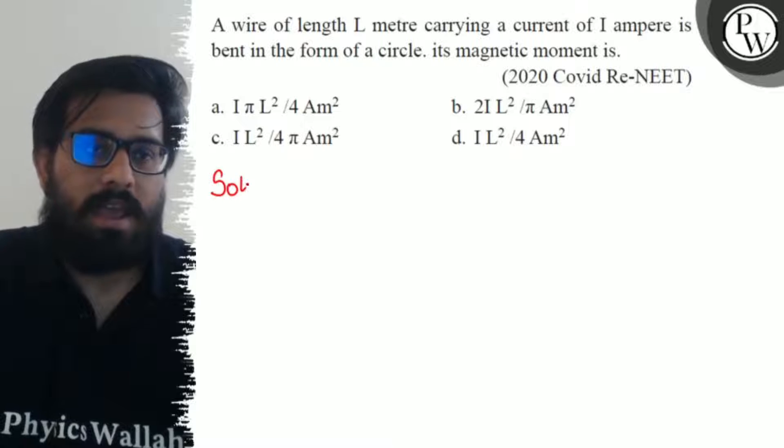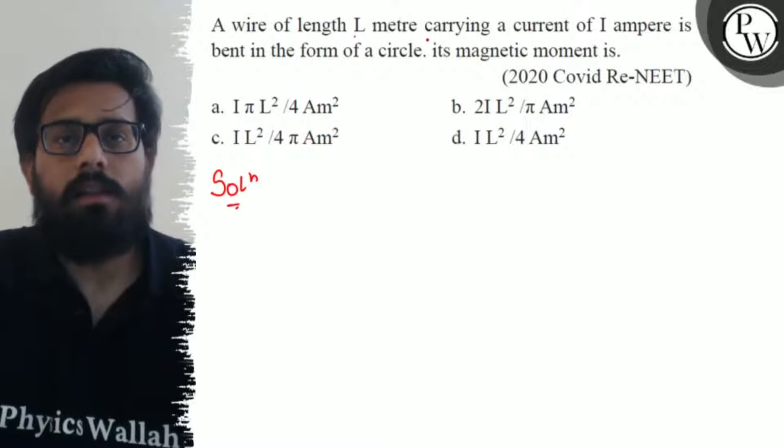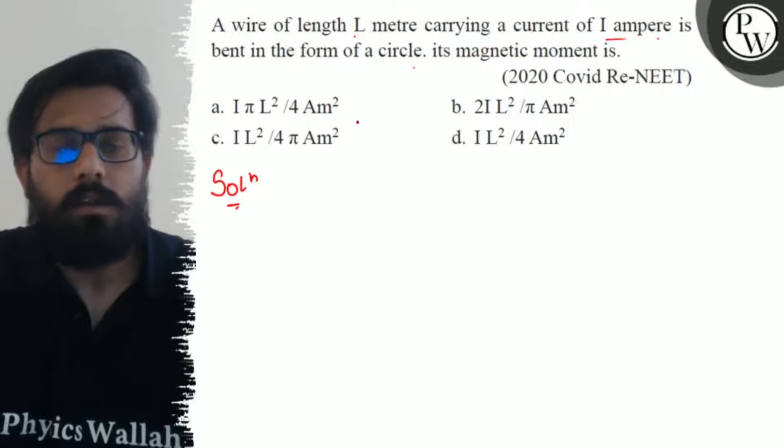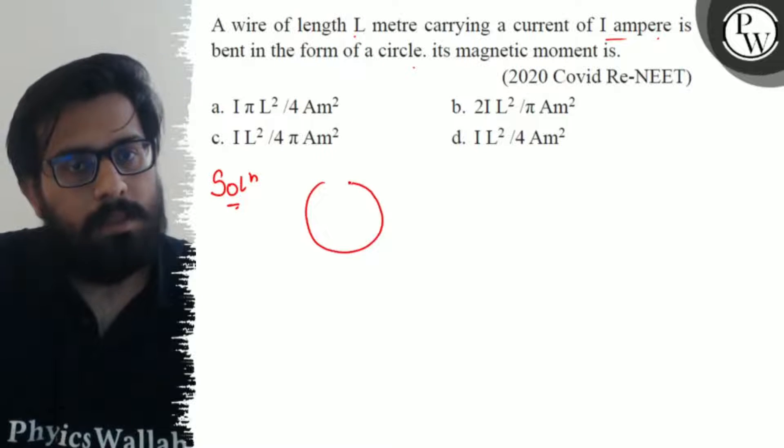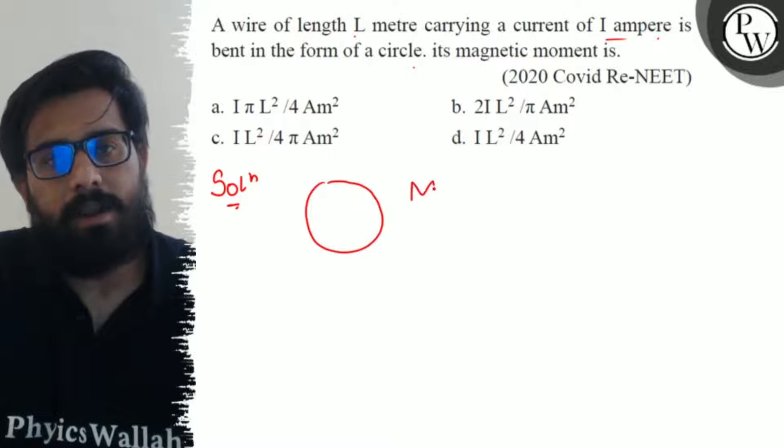So we have a wire of length L carrying a current of I ampere, and it is bent in the form of a circle. Now for a circular loop, the value of magnetic moment can be written as I into A.